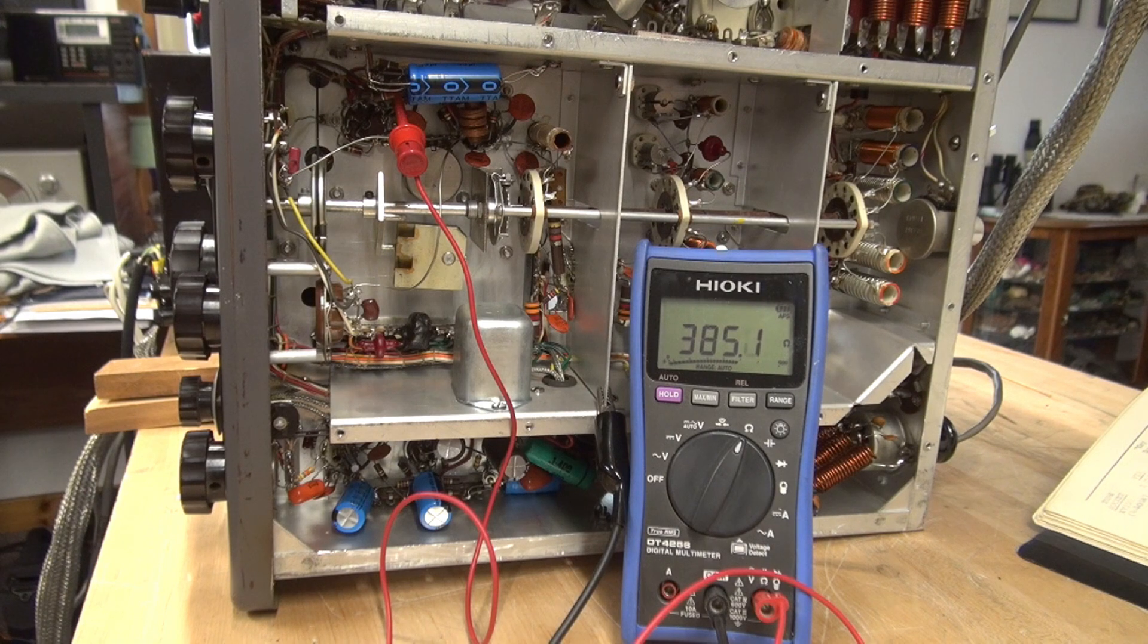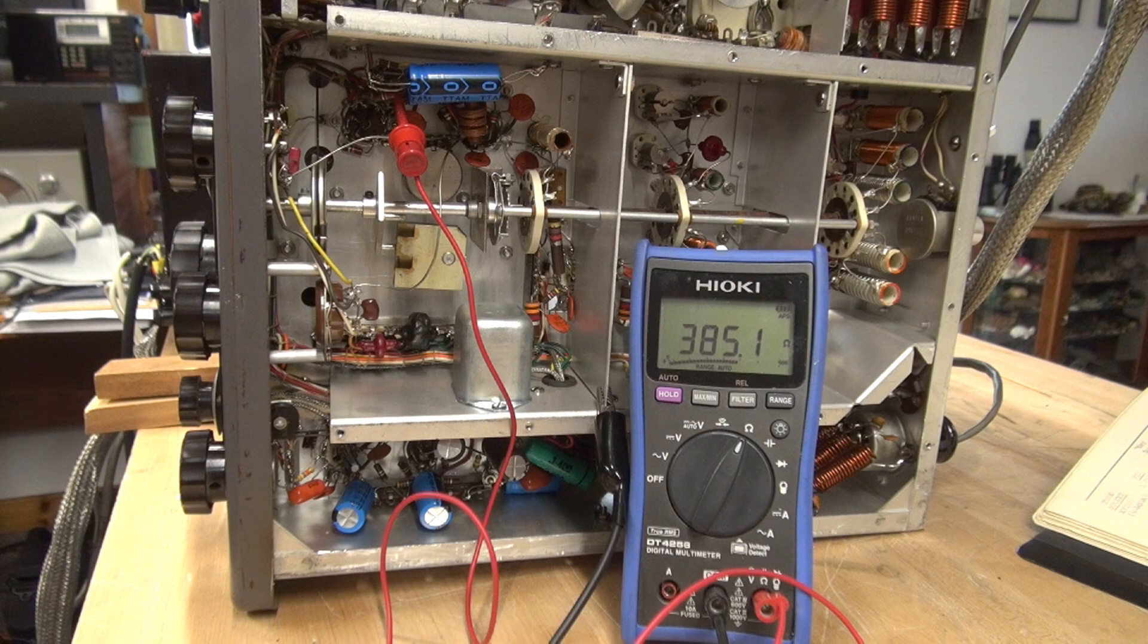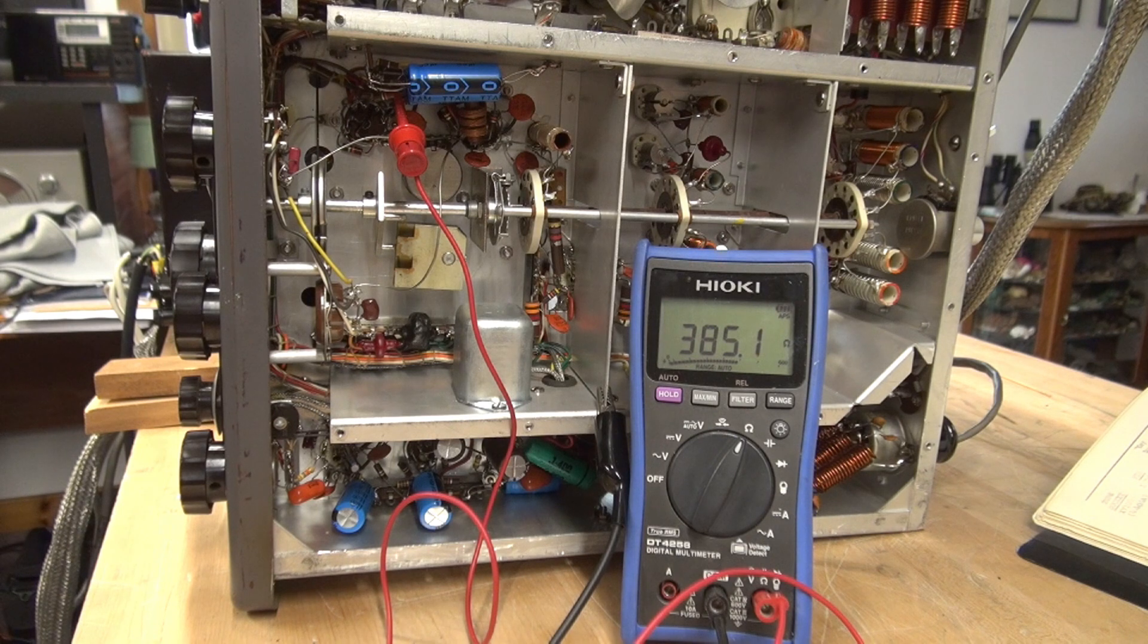So looking at the schematic, I see that there is a 005 microfarad disc cap called C, I believe it's 108, going to ground. I'll show you that on the schematic. But I believe that that disc cap is shorted, or close to short, and it's pulling my negative bias down.